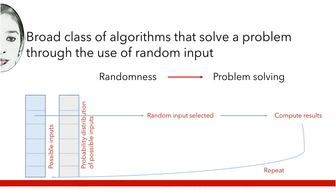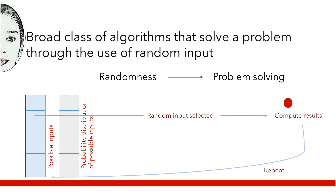In a Monte Carlo algorithm, a set of possible inputs are tabulated, and then the probability distribution of each input is realized. Then one input is randomly selected and the algorithm is executed. The realized result is recorded, and then the process is repeated until the result converges. The probability of every input is determined, and the efficiency of Monte Carlo output depends on the number of repetitions.